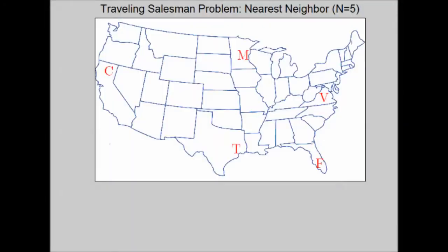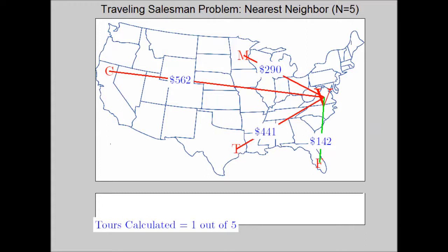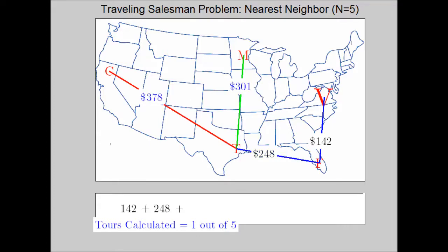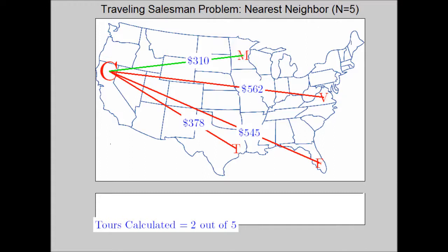In this video we're going to demonstrate the nearest neighbor algorithm to solve the traveling salesman problem. We have five cities to travel to. We're going to pretend to actually be the traveling salesman, pick a starting city, and move through each city one at a time. At each step along the way we will choose the cheapest route.